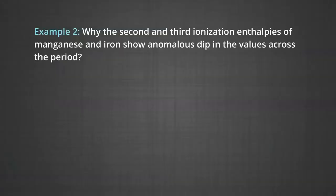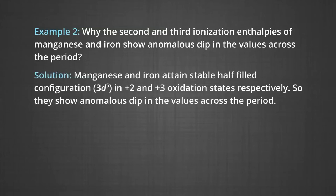Example 2: Why do the second and third ionization enthalpies of manganese and iron show an anomalous dip in values across the period? The answer is that manganese and iron attain the stable half-filled configuration 3D5 in the +2 and +3 oxidation states respectively, so they show an anomalous dip in values across the period.